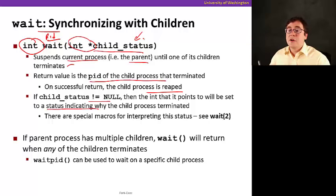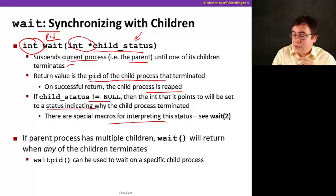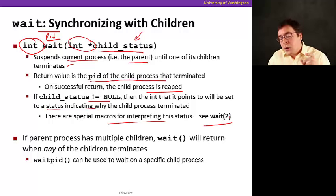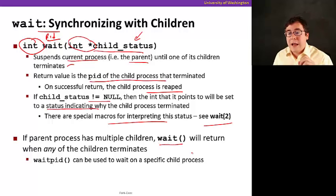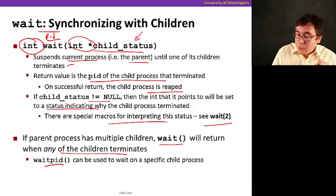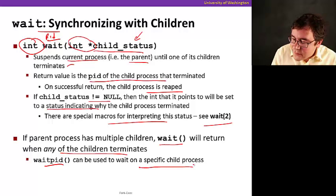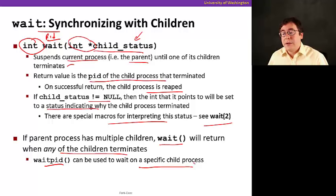And there are special macros for this, to interpret this status, and you can see wait two. You can do man wait two and see what those mean. So now note that if a parent process multiple children, if you call wait, it's a return when any of the children terminates. That's why there's another call called wait PID. And what it does, you can wait on a specific child process by passing its PID as a parameter.